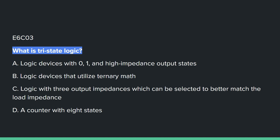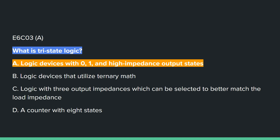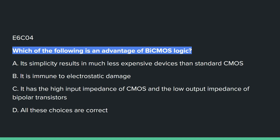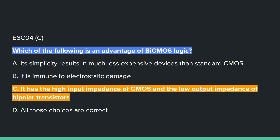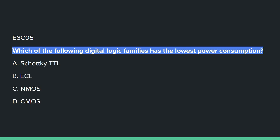E6C03: What is tri-state logic? A, logic devices with 0, 1, and high impedance output states. E6C04: Which of the following is an advantage of bi-CMOS logic? C, it has the high input impedance of CMOS and the low output impedance of bipolar transistors. E6C05: Which of the following digital logic families has the lowest power consumption? D, CMOS.